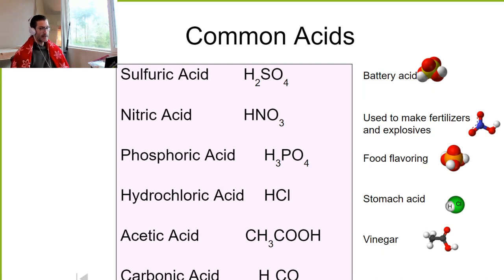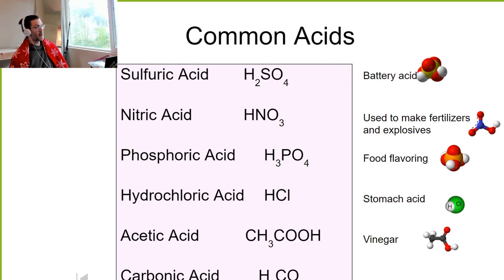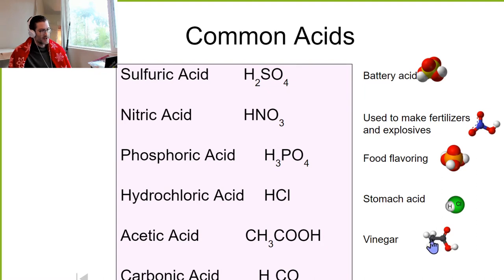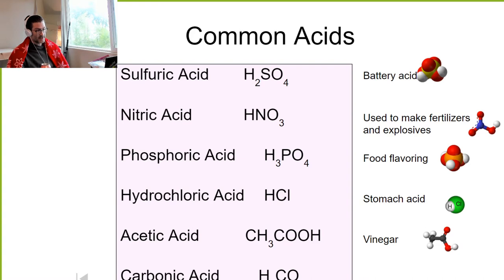Once we drink it, it goes into our stomach where we have stomach acid, which is hydrochloric acid. Acetic acid is our old friend vinegar — vinegar is a dilute form of acetic acid. Pure acetic acid is flammable because of its carbon-carbon bond; if there's no water around to stop the reaction, it will burn if you set it on fire.